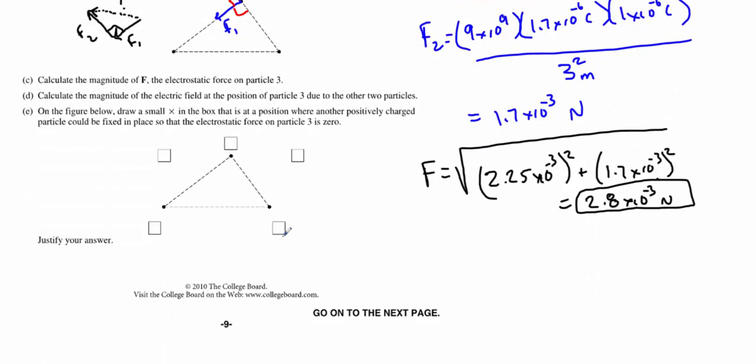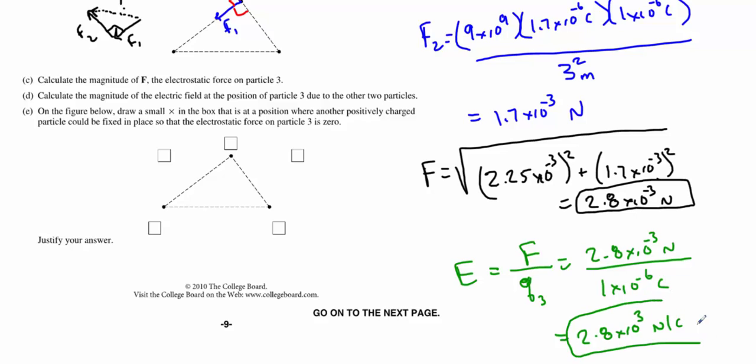Part D now says, what's the magnitude of the electric field at that spot, due to the other two particles? Well, you could go down the long path of going with the fundamental equation, or you can remember that the electric field anywhere is going to be equal to the force acting on any charged particle at that spot, divided by the charge of said particle. So it's the force that we just found, 2.8 by 10 to the negative 3 newtons, divided by the charge of charge 3, and that was the 1 by 10 to the negative 6 coulombs. This is going to get us an overall electric field of 2.8 by 10 to the 3. That's going to be a newton per coulomb. Certainly the easiest way of doing part D.